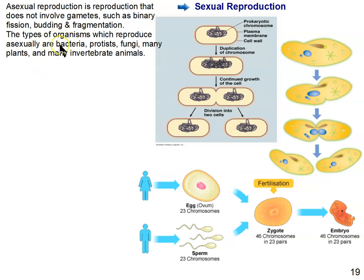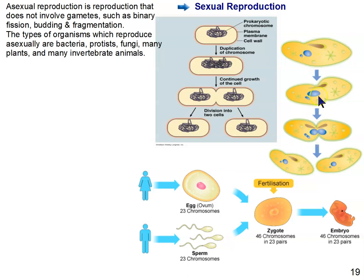Organisms that reproduce asexually include bacteria and protists. Bacteria split in two by binary fission. Protists, like a paramecium, also split in two, but this type involves the nucleus splitting first — because it's a eukaryote, it has a nucleus that must divide before the cell divides. You may recognize the term for that process of nuclear division: mitosis.